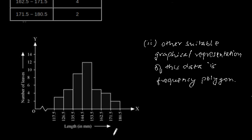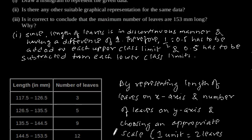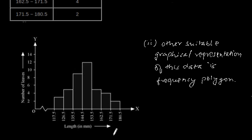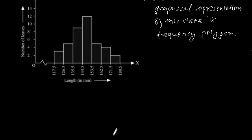Now the third part. Third part is: is it correct to conclude that the maximum number of leaves are 153 mm long? So considering this histogram, we can solve for the third part.